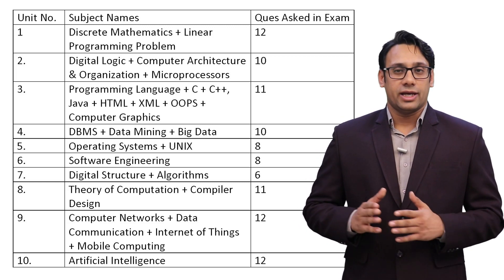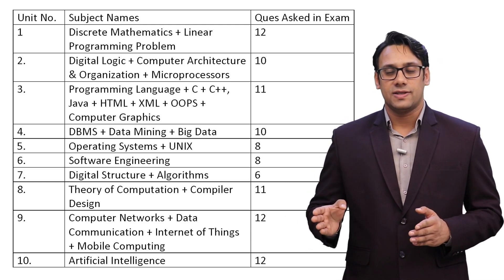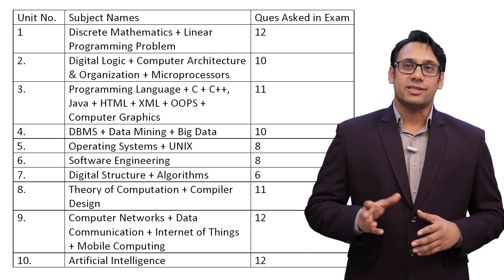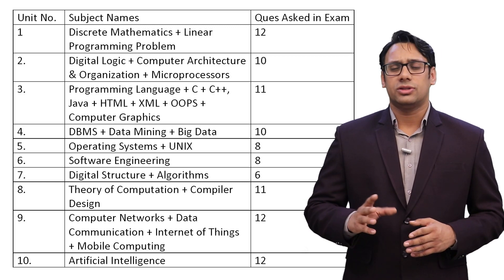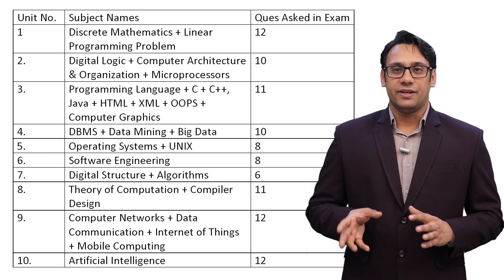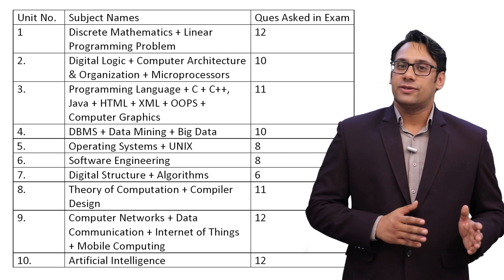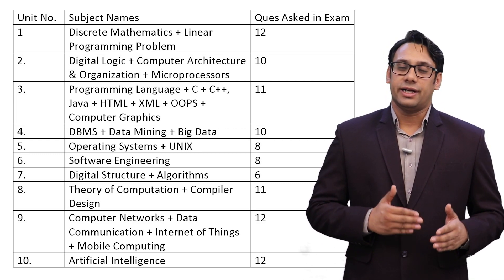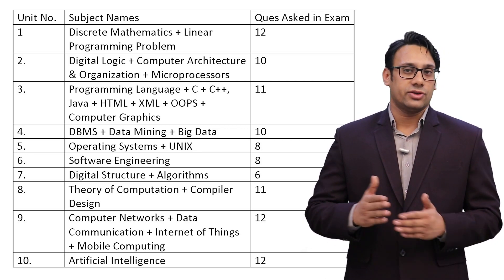Unit 5 is Operating System and Unix, which includes Linux. The commands and structure of Unix and Linux are very similar, so spend the maximum time on Operating System and only 2 to 3 days (about 12 to 15 hours) on Unix and Linux. Unit 6 is Software Engineering — they asked 8 questions — no compromise, you must complete this unit thoroughly. Unit 7 is Data Structures and Algorithms — also very important, as you cannot study Algorithms without Data Structures.